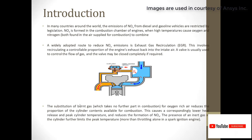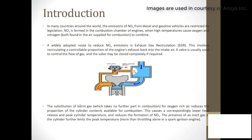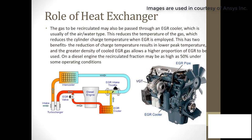The substitution of burnt gases, which take no further part in combustion, for oxygen-rich air reduces the proportion of cylinder contents available for combustion. This causes a correspondingly lower heat release and peak cylinder temperature, reducing NOx formation. The presence of inert gas in the cylinder further limits the peak temperature. These points briefly describe exhaust gas recirculation.